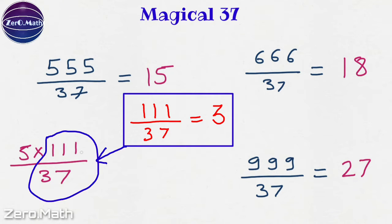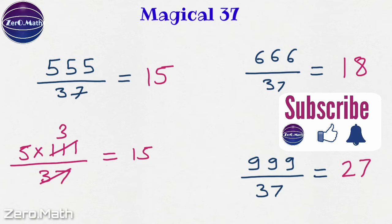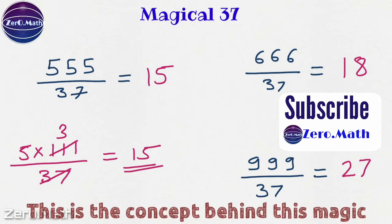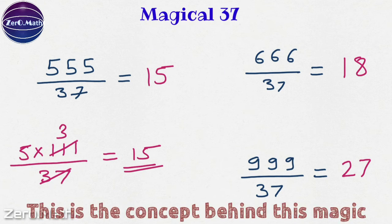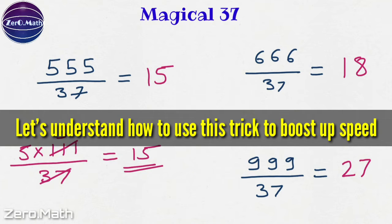Now we know 111 by 37 equals 3. So 37 times 3 is 111. So 5 into 3 is 15. And this is the real concept behind this magic. Now let's understand how we can use this trick to boost up our calculation speed.